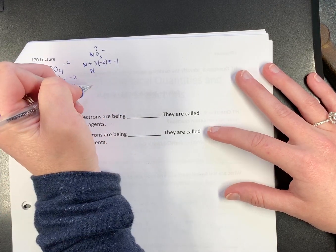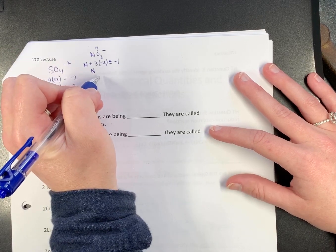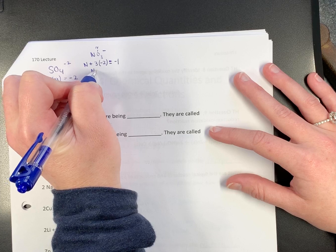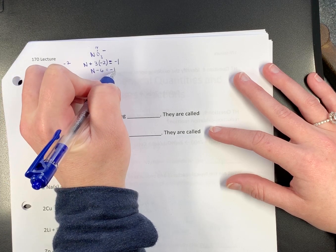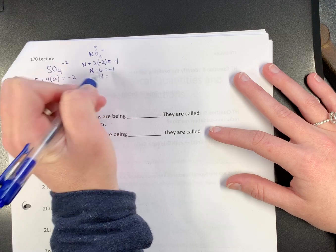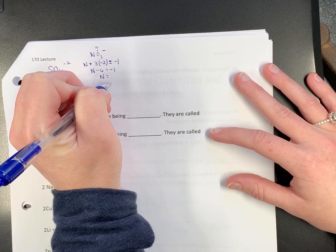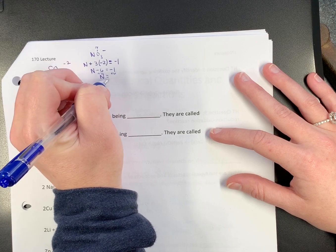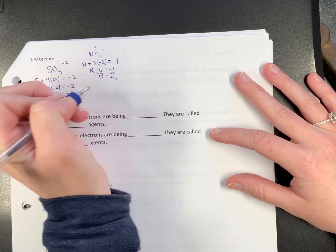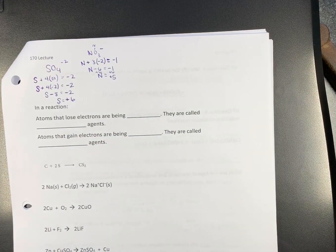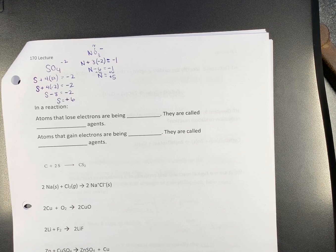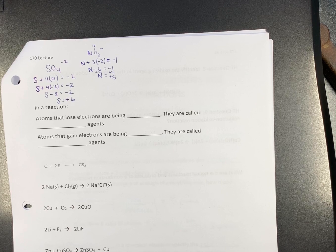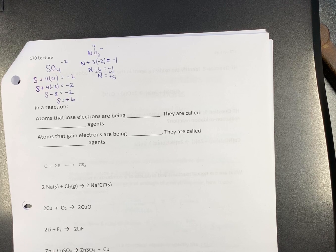So nitrogen, 3 times negative 2 is negative 6. So what does that make nitrogen? Add 6 to both sides. You get positive 5.